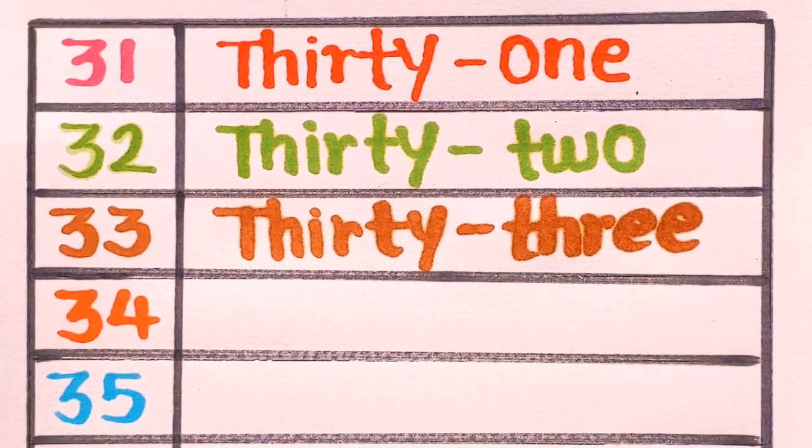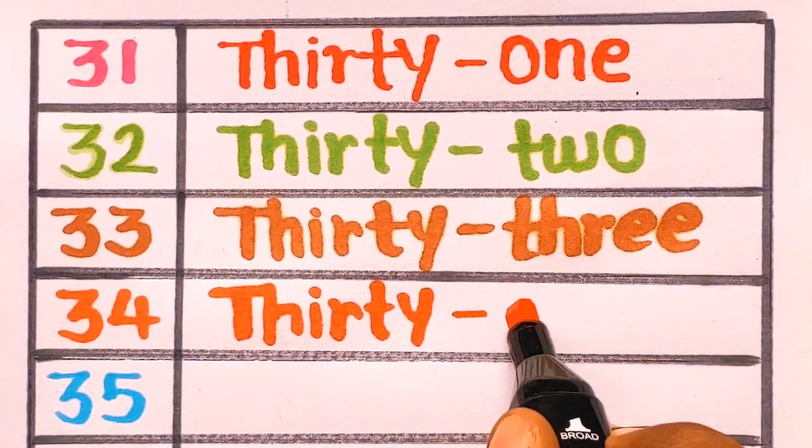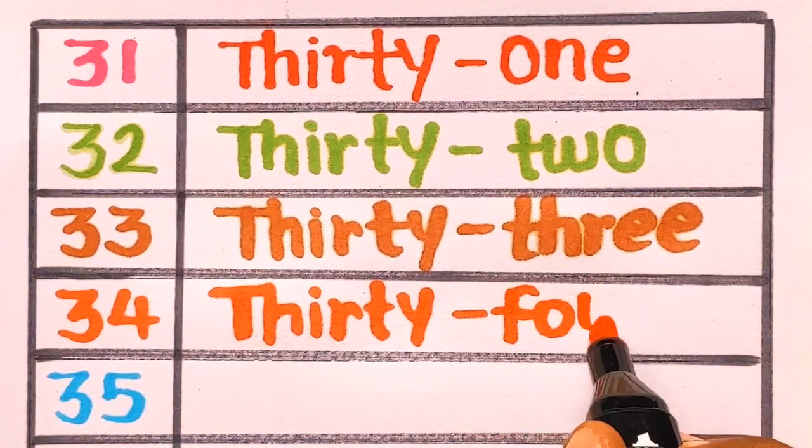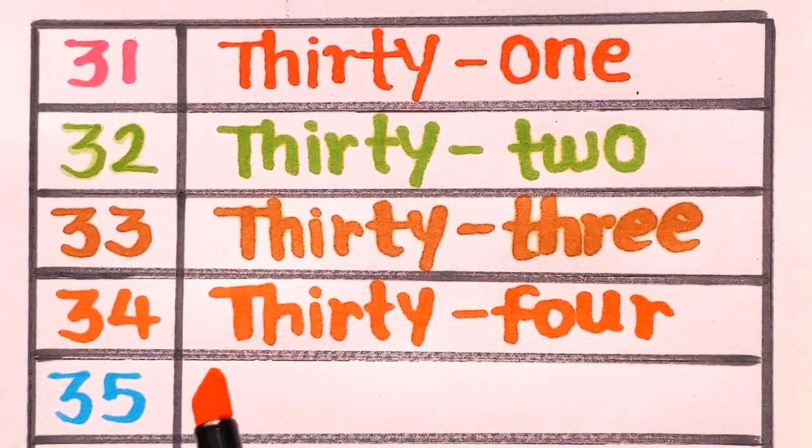Next is 34. T-H-I-R-T-Y, thirty. F-O-U-R, four. 34, thirty-four with an orange color.